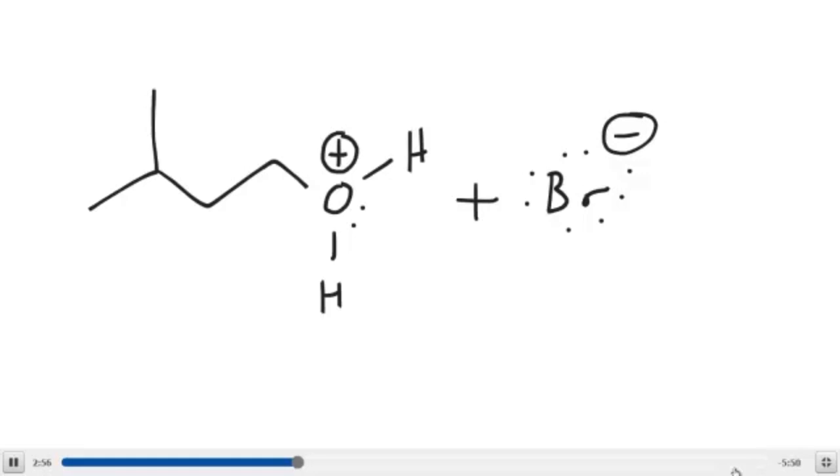This is still a strong acid. This guy right here is our conjugate acid. He's still a strong acid, but he is a weaker acid than HBr. So this is the favorable side of this reaction. That's a fast step.